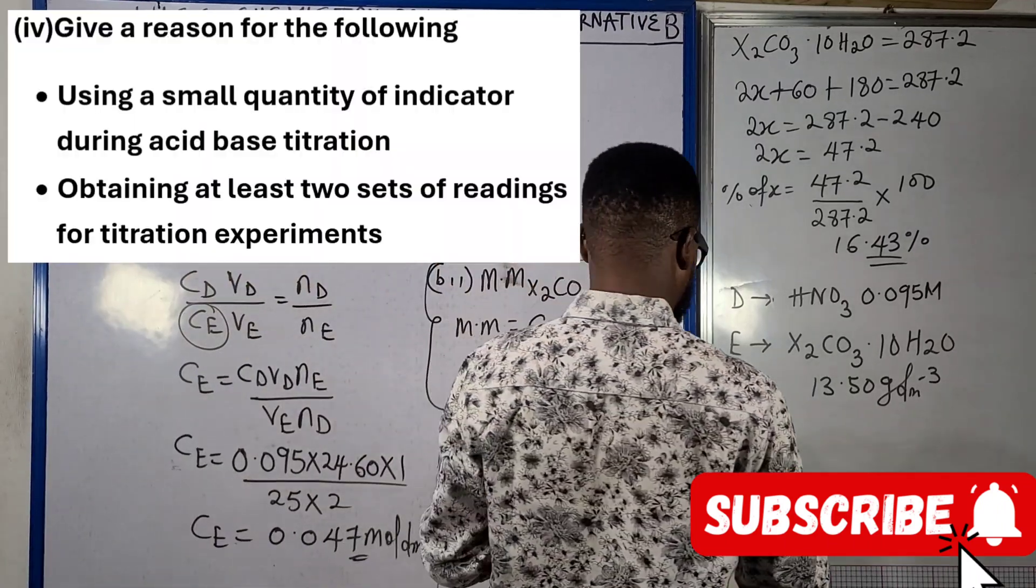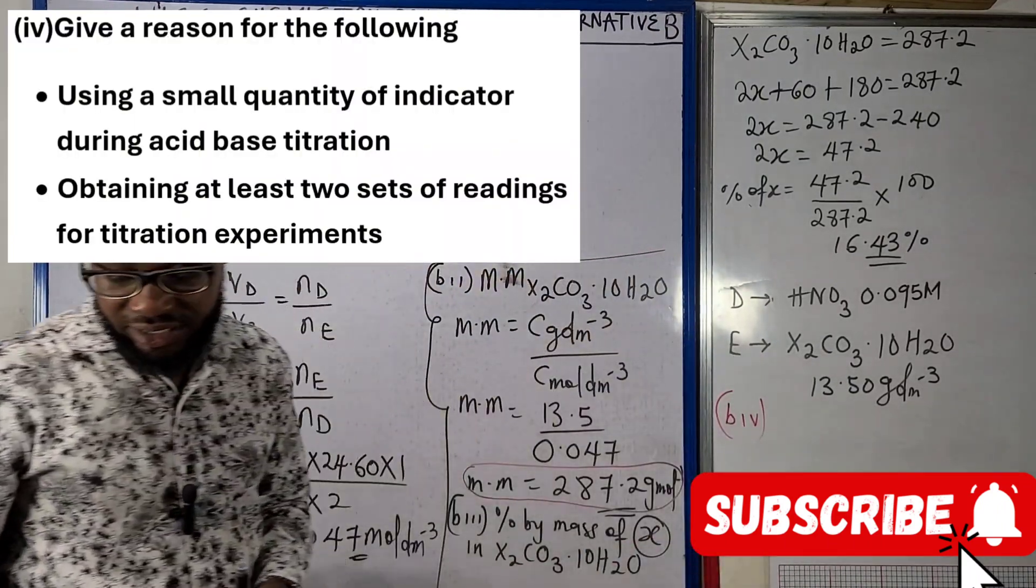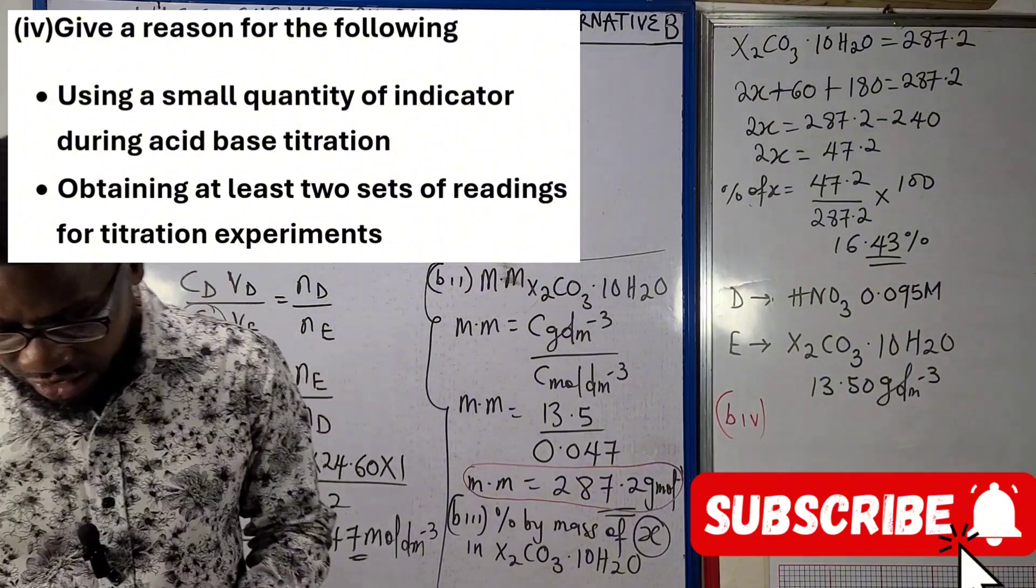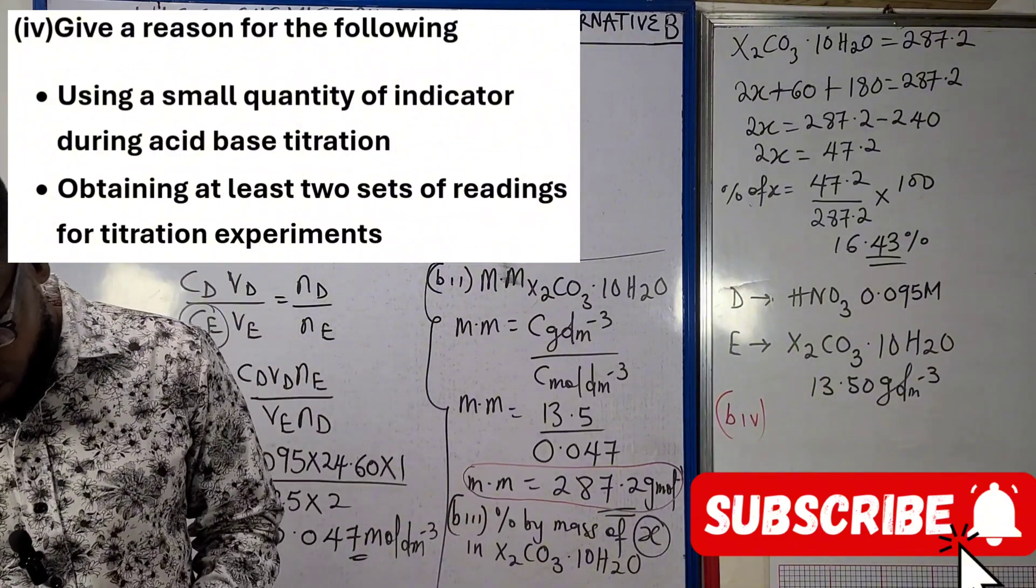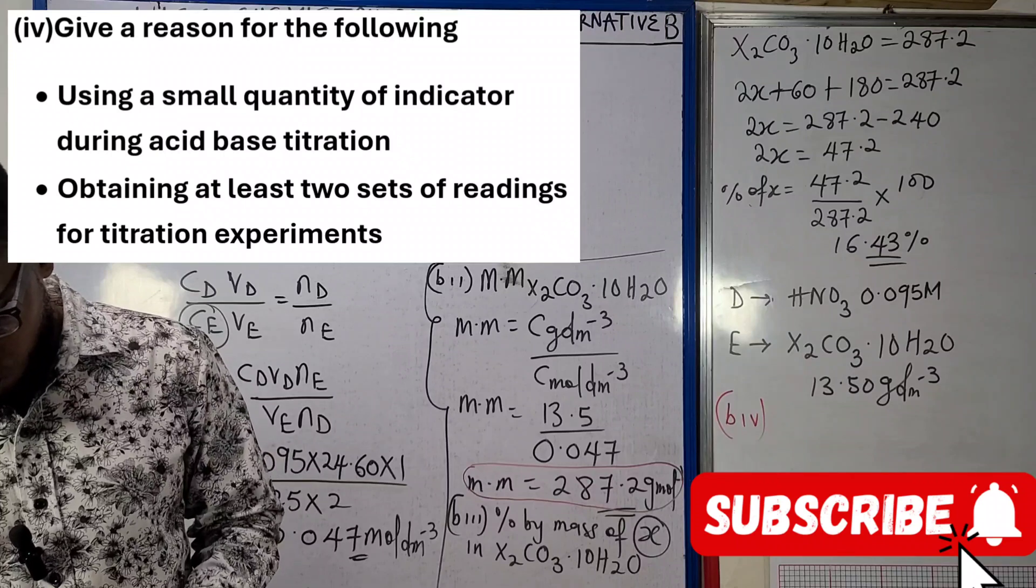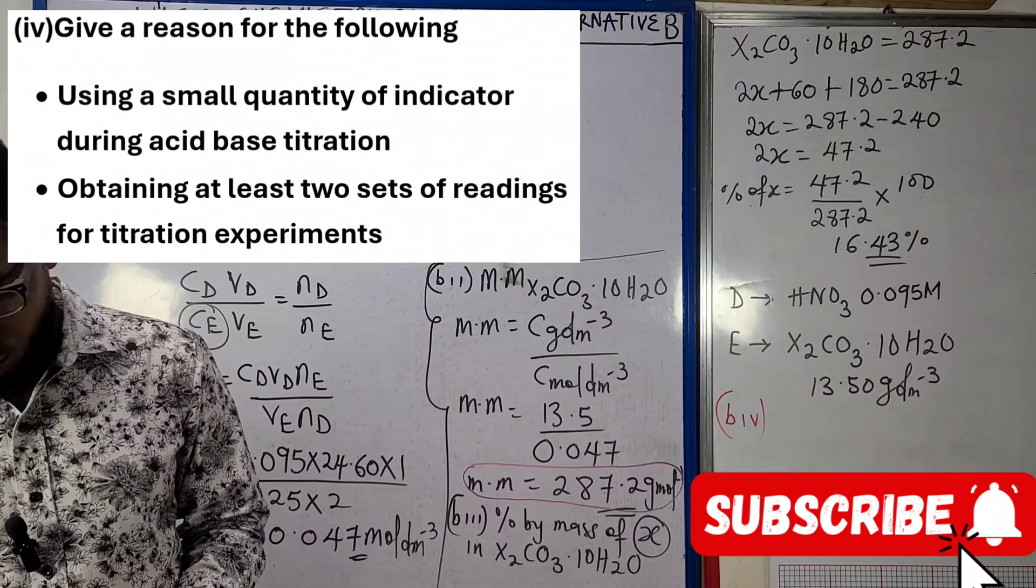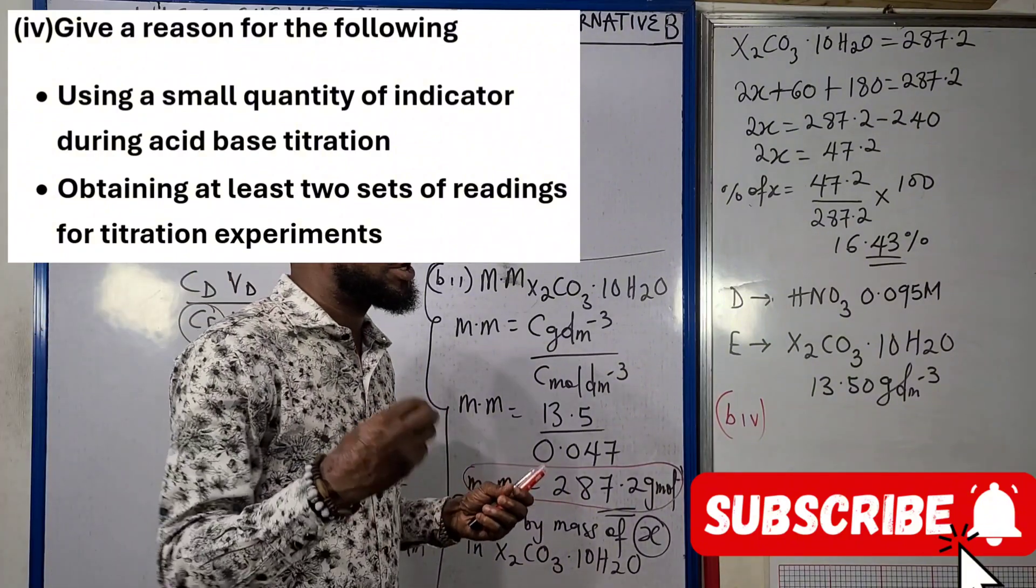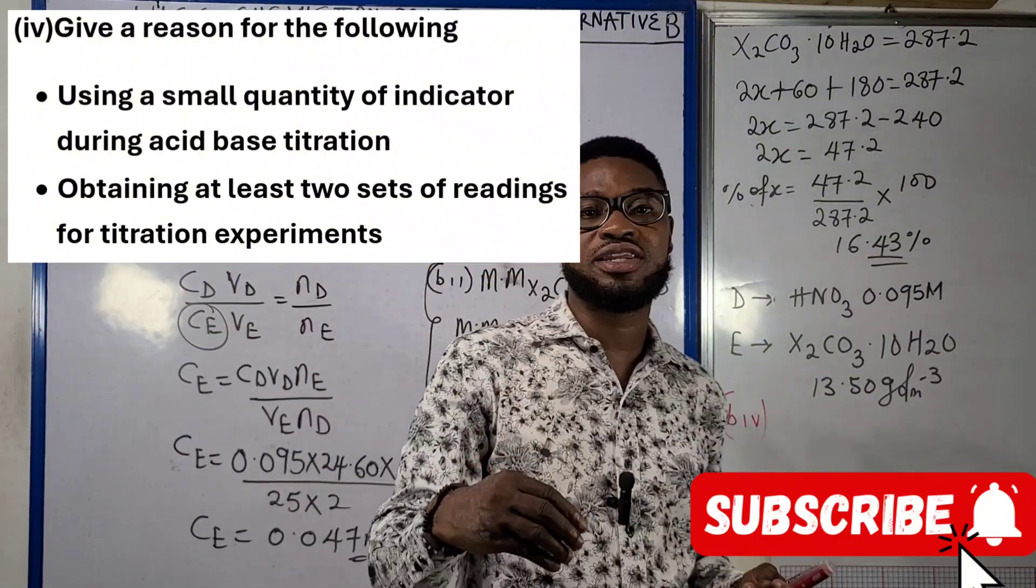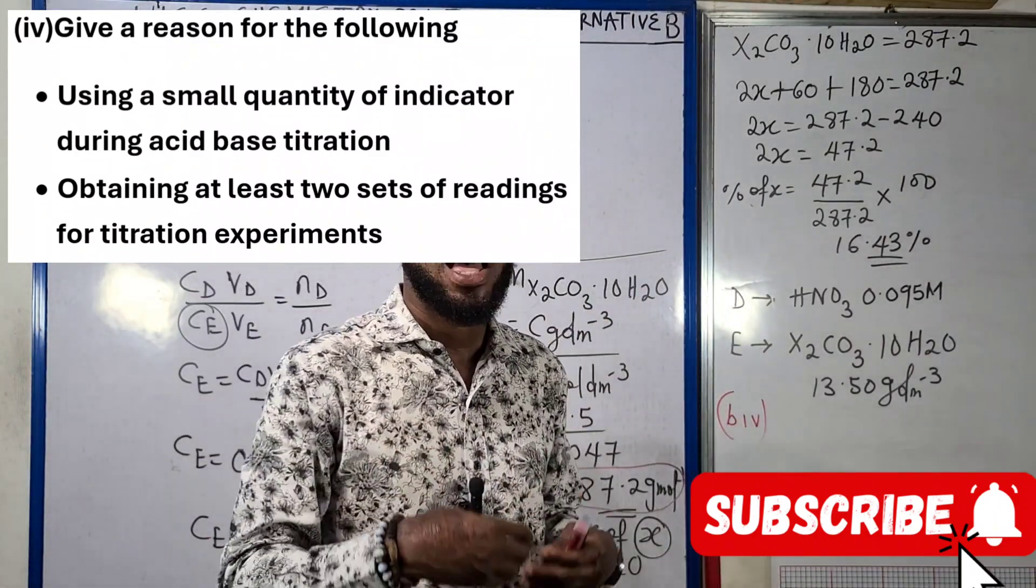Onto B4, that's question Roman figure 4, that we are going to be answering verbally. We were taught to give a reason for the following: why is it that we give a reason for using a small quantity of indicator during acid-base titration?